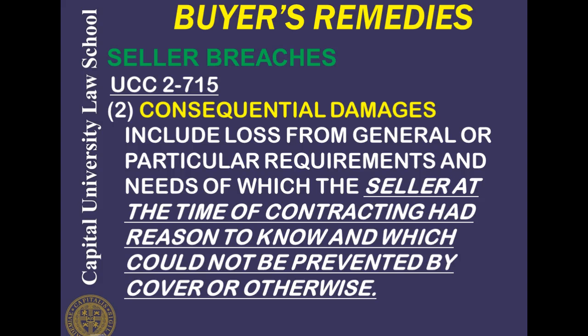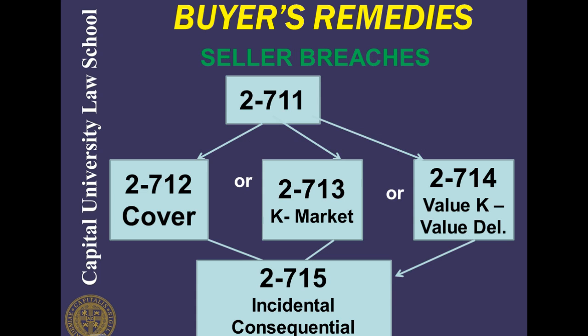Other instances of consequential damages could include other contracts that are breached as a result of the seller's failure to deliver or delivery of non-conforming goods, causing the buyer to breach those downstream contracts and suffer damages. To summarize, 2-711 provides for cover under 2-712, for a difference in contract and market price under 2-713, and damages under 2-714 for delivered-and-accepted goods that did not conform. All three provide in certain instances for additional incidental and consequential damages under 2-715.